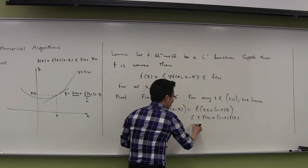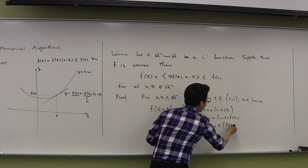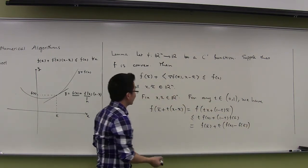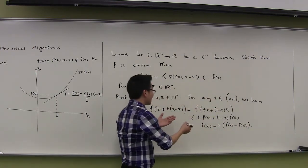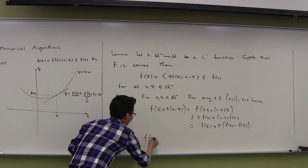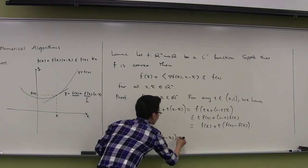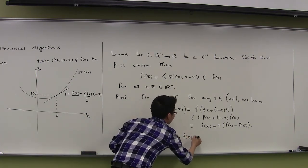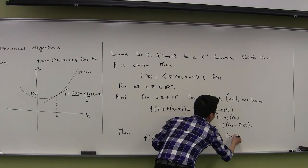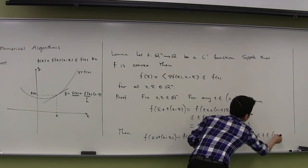Subtracting f(x-bar) from both sides: f(x-bar + t(x minus x-bar)) minus f(x-bar) is less than or equal to t times (f(x) minus f(x-bar)), for all t in (0,1]. Dividing both sides by t: [f(x-bar + t(x minus x-bar)) minus f(x-bar)] over t is less than or equal to f(x) minus f(x-bar), for all t in (0,1].